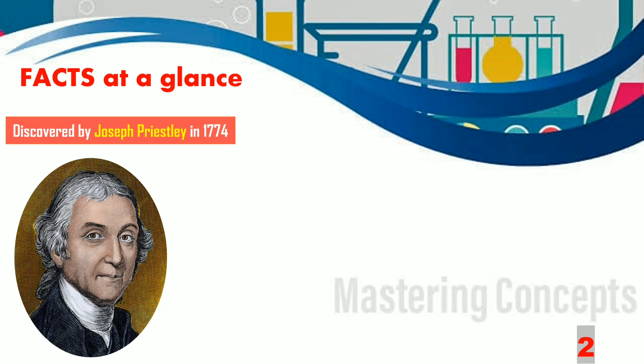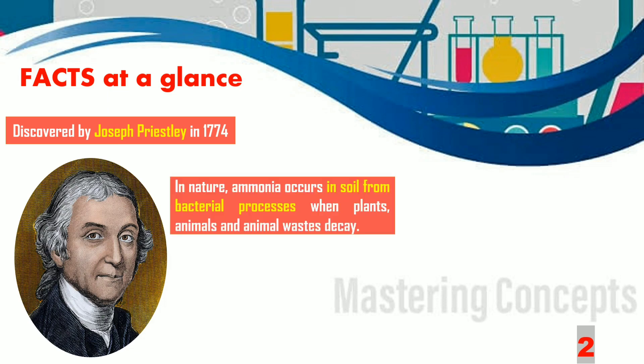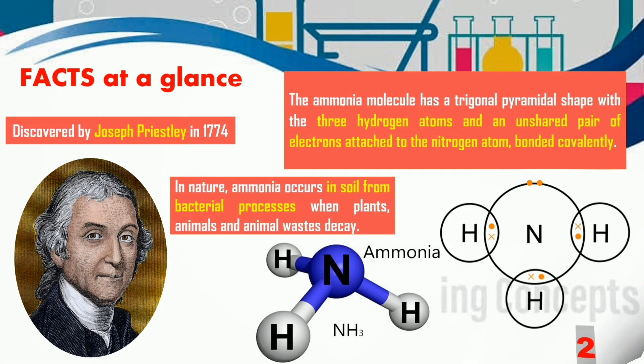Ammonia Gas was discovered by Joseph Priestley in the year 1774. It is found in the soil where dead plants and animals are decomposed by bacteria. Now how does one molecule of ammonia look like?